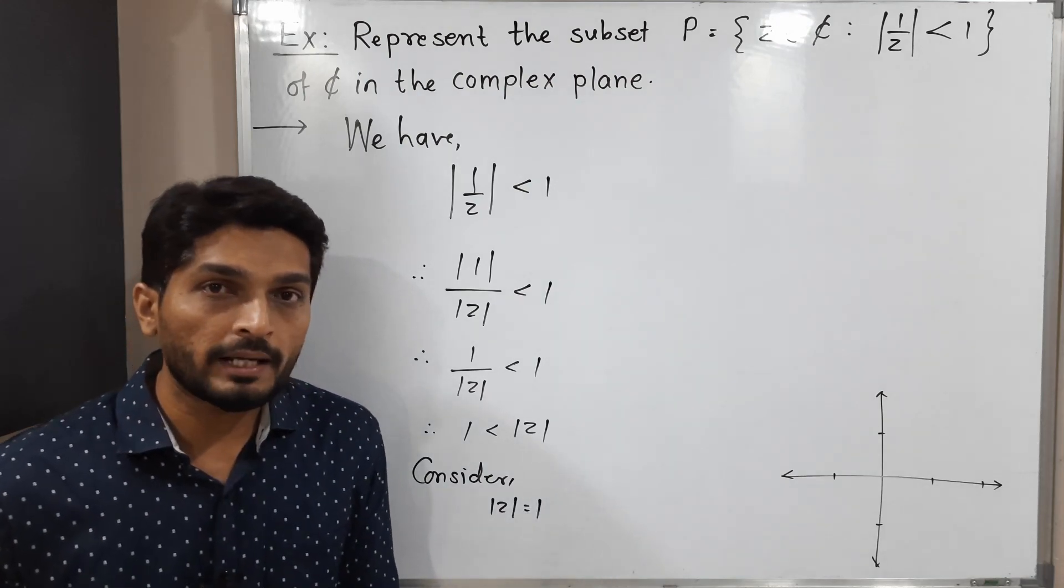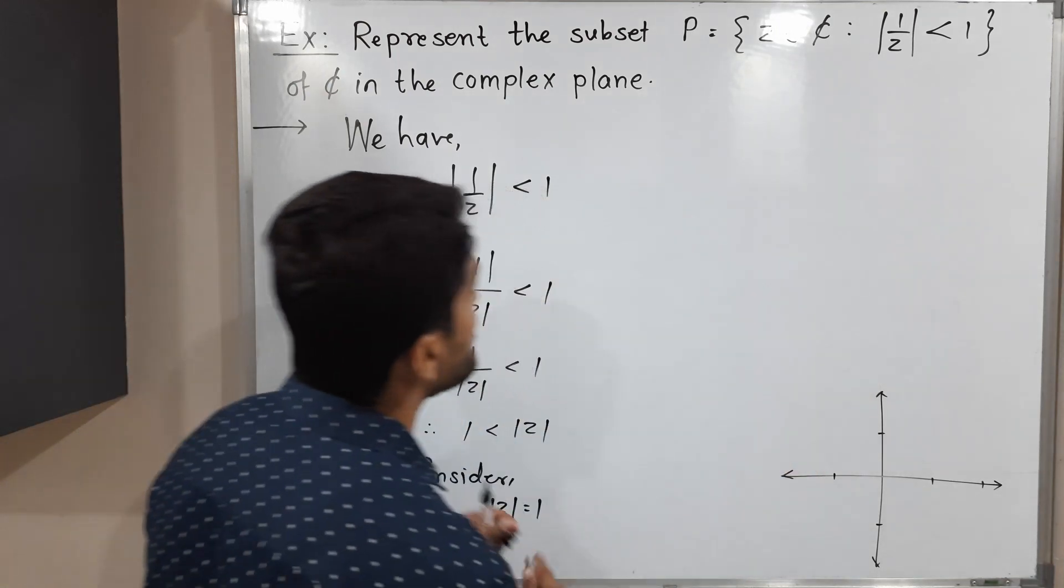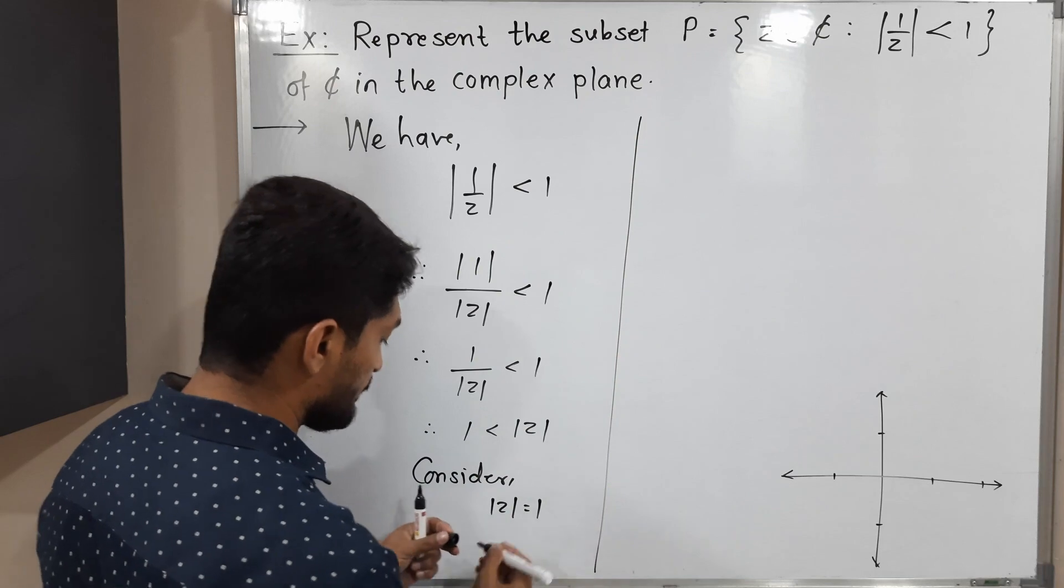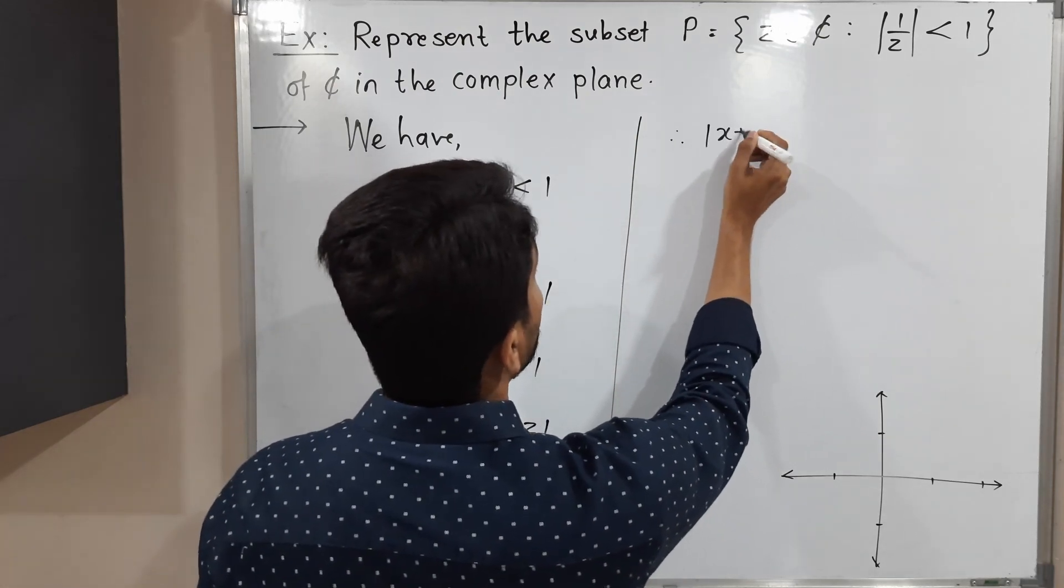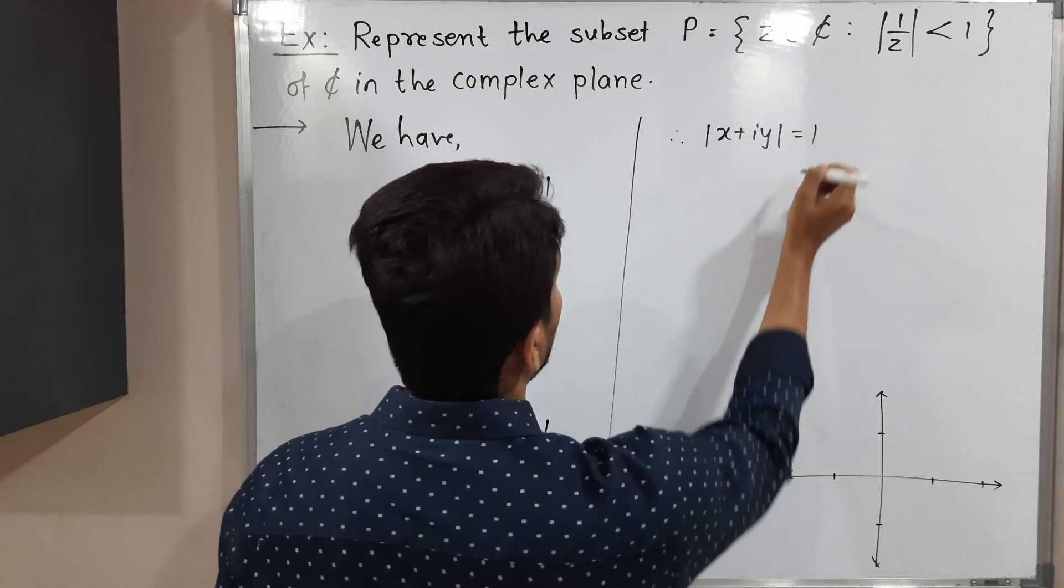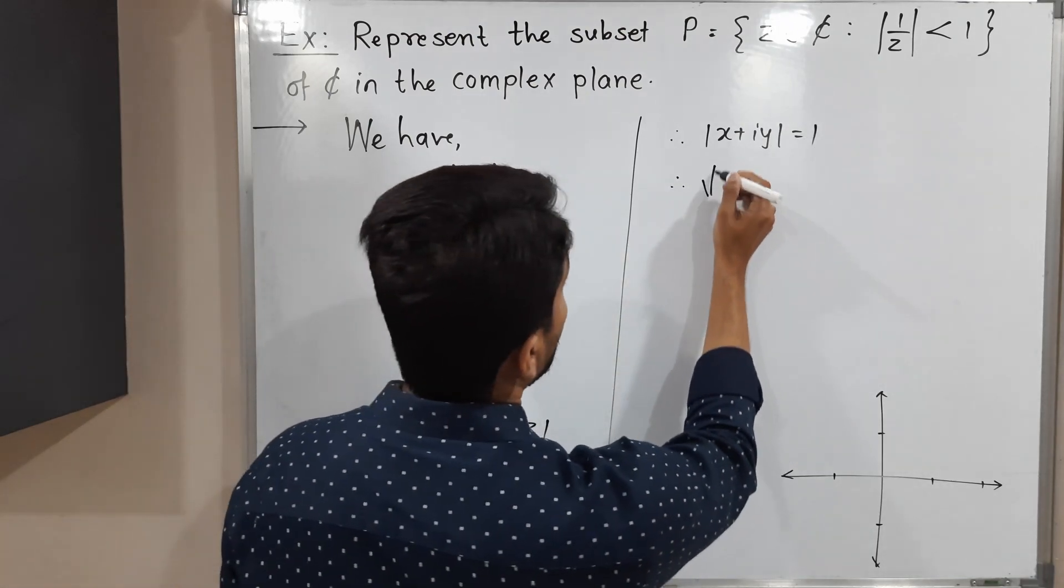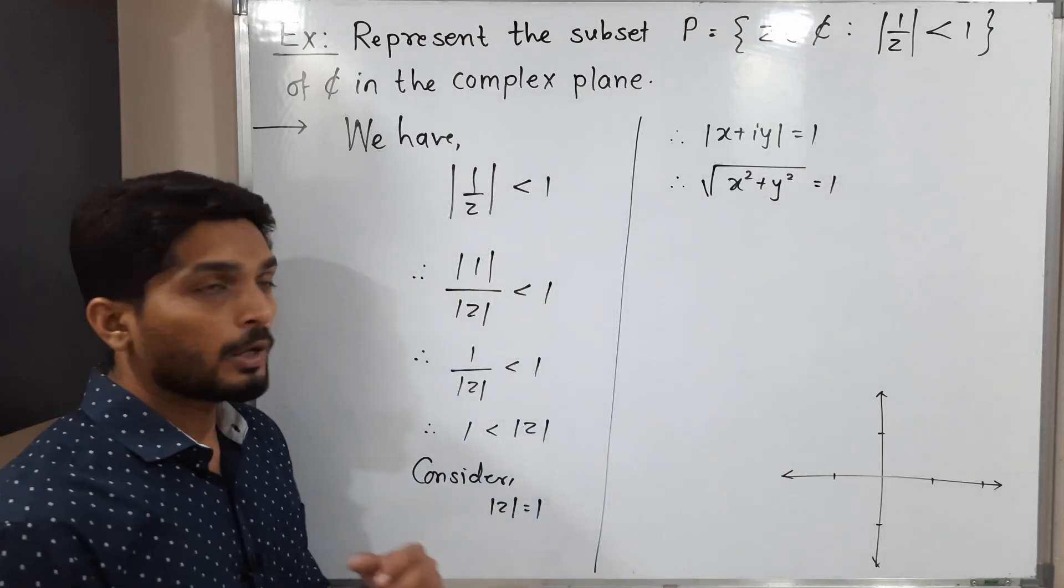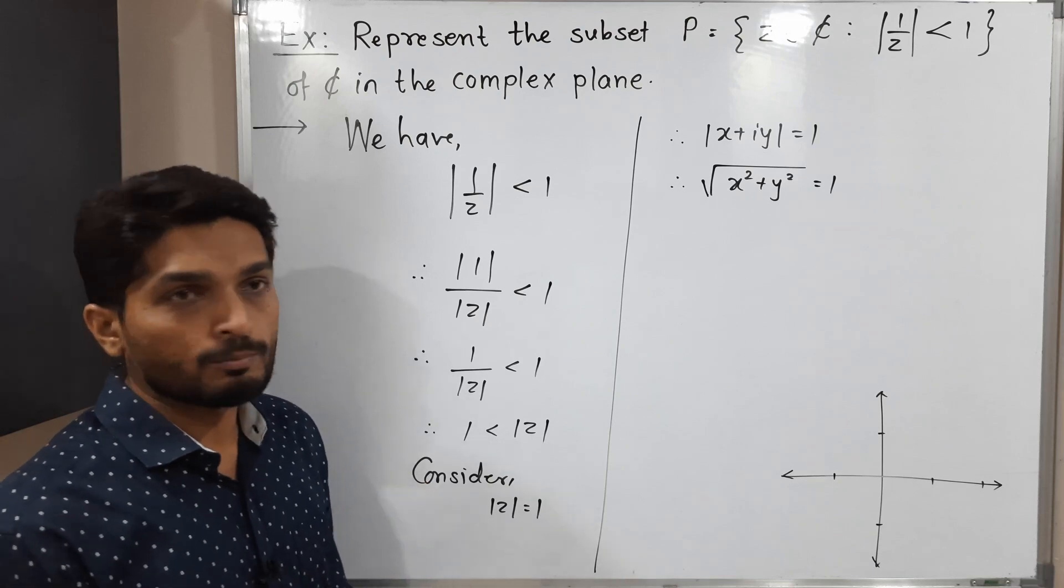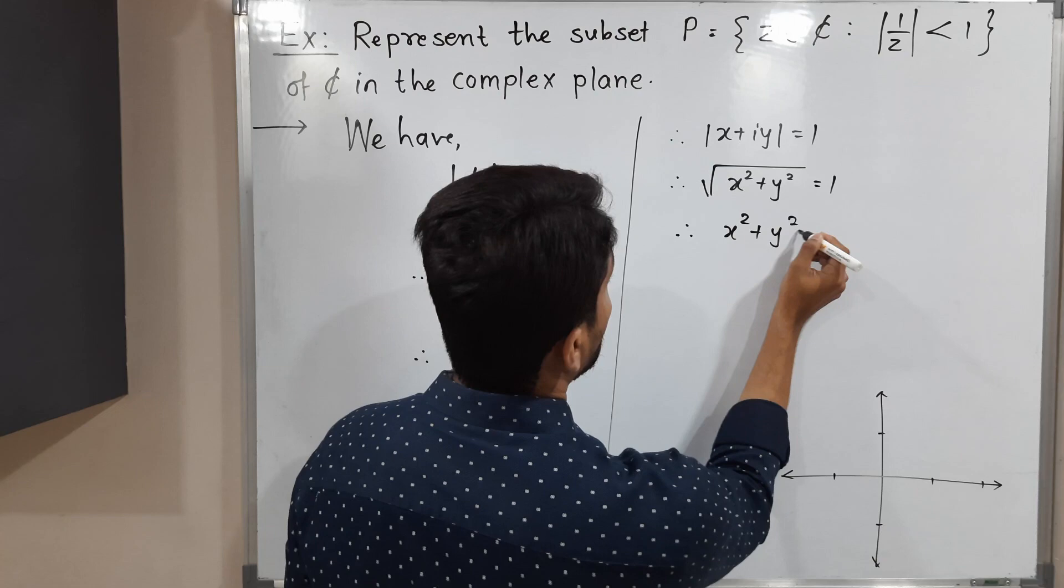I will replace z by its Cartesian form x + iy. Therefore |x + iy| = 1. The definition of mod says its value is √(x² + y²) = 1. Now to remove the square root, I will take the square of both sides, so x² + y² = 1.